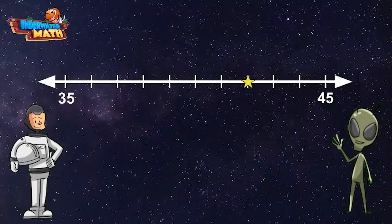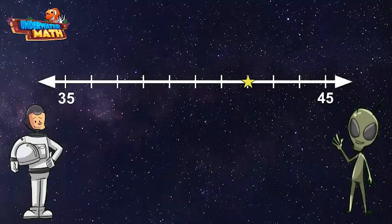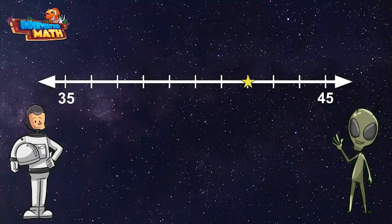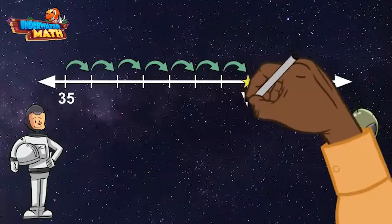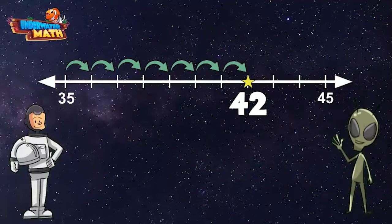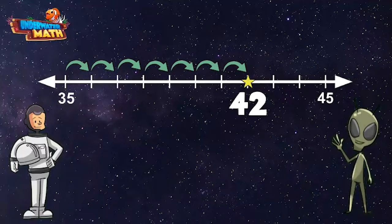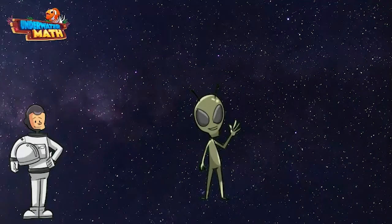35 and 45 represents one whole number. Let's start at 35 and count until we reach the star: 36, 37, 38, 39, 40, 41, 42. The star represents the number 42. Let's try another one. Lenny, give us a number